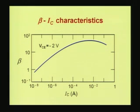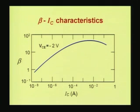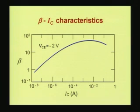We have explained the variation of beta with collector current. Beta is small at low collector currents, it increases, reaches a peak and then falls. Please note the range of collector currents considered — this is for a small signal device. The range of collector current is from 10 to the power minus 8 amperes to 1 ampere, which is a very wide range, and that is why the axis is logarithmic. The variation of beta can be seen to be from about 1 to a peak of somewhere about 70 to 80, and then there is a fall.